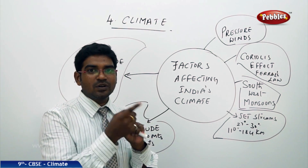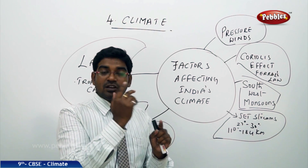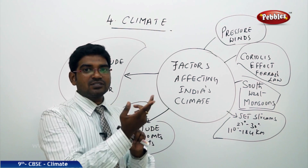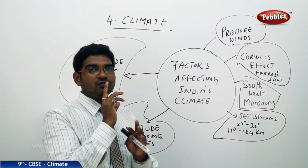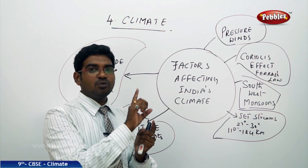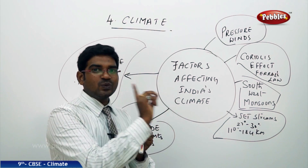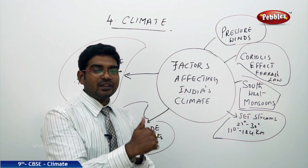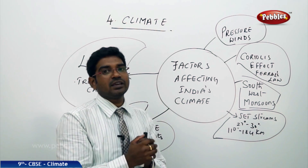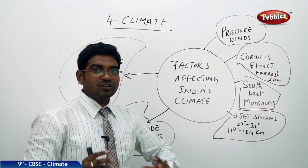In the north, winds move towards the eastern side, while in the south, they move towards the western side. This is the reverse law, or Ferrell's law, which states that because of the movement of the earth, winds in the northern hemisphere move towards the eastern side, while in the southern hemisphere, they move towards the western side. This is the Coriolis effect as stated by Ferrell's law.